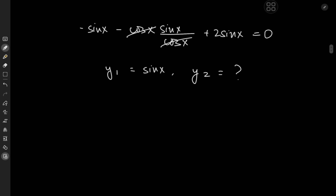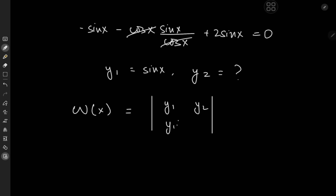So let's recall what the Wronskian is. The Wronskian is a function W of x defined in terms of the determinant of the matrix with elements y1, y2, y1 prime, y2 prime — that is, the solutions to our differential equation and their derivatives. Expanding this gives us y1 times y2 prime minus y1 prime times y2.